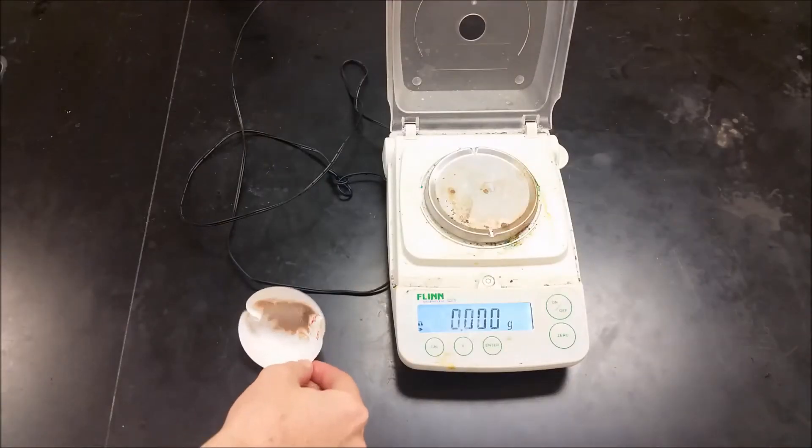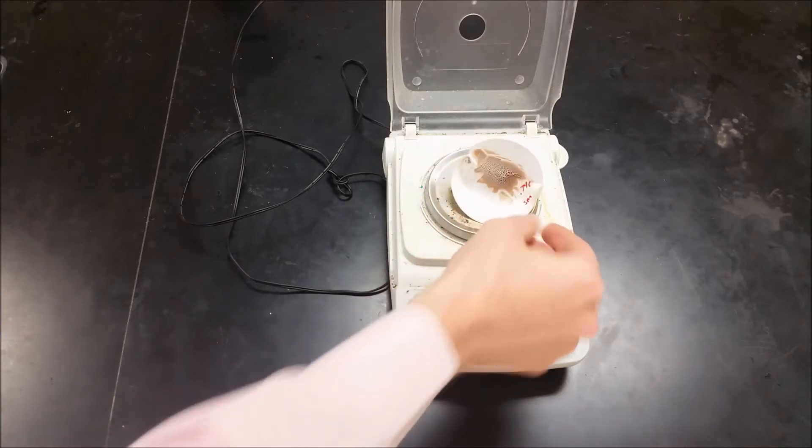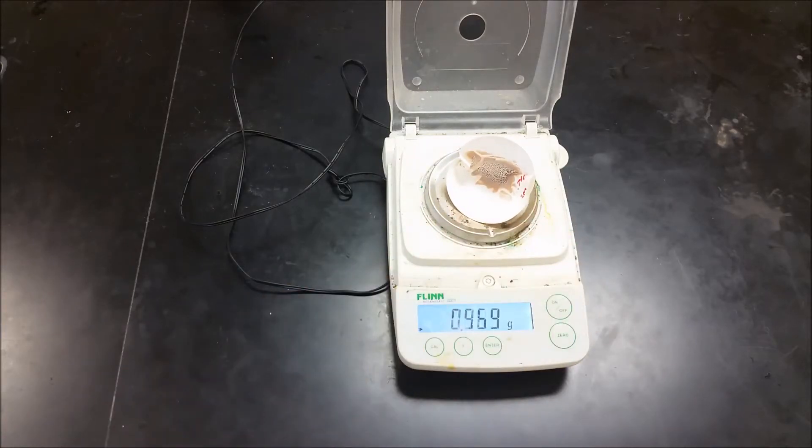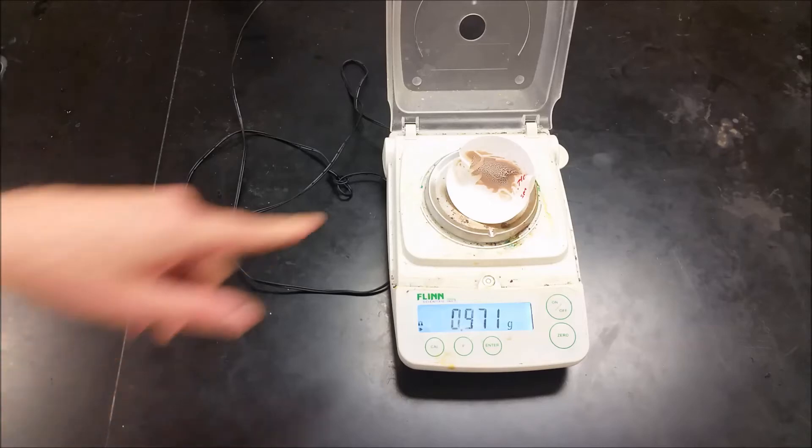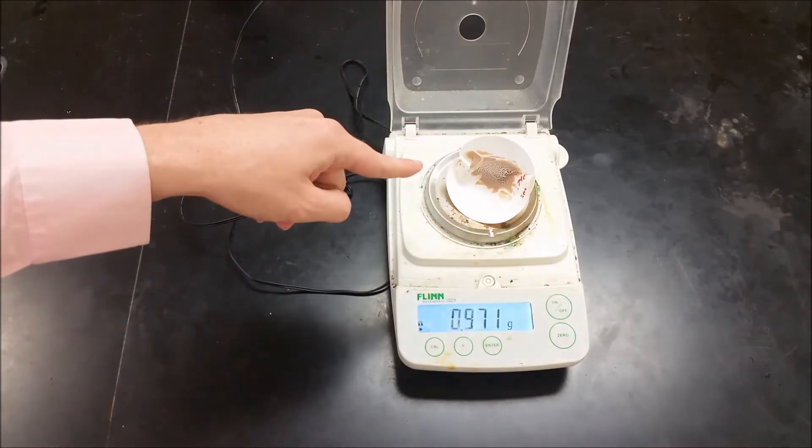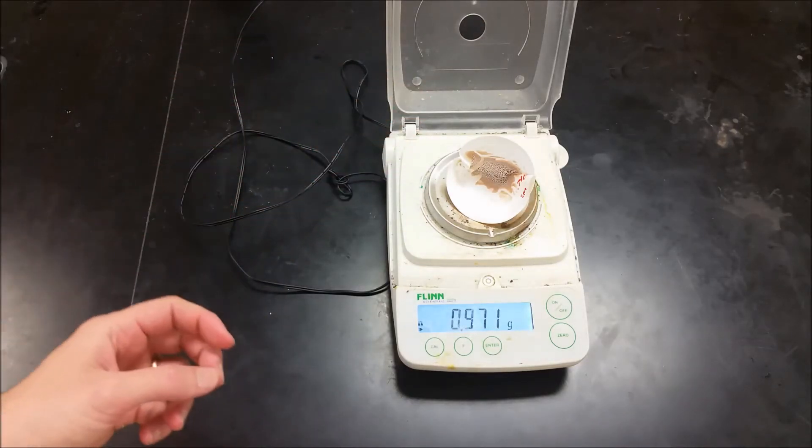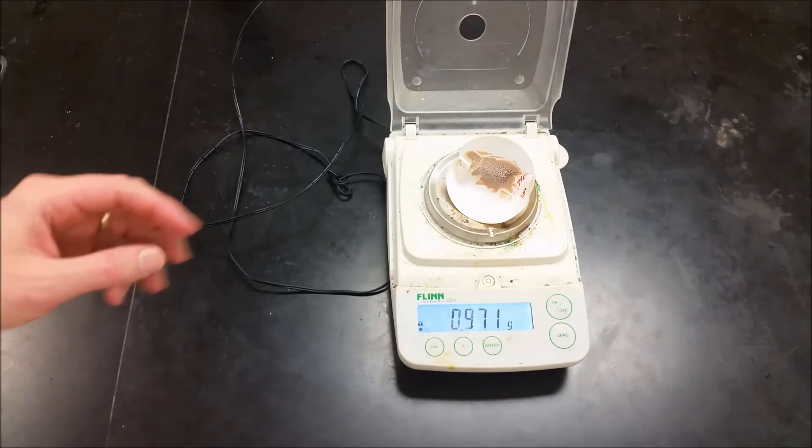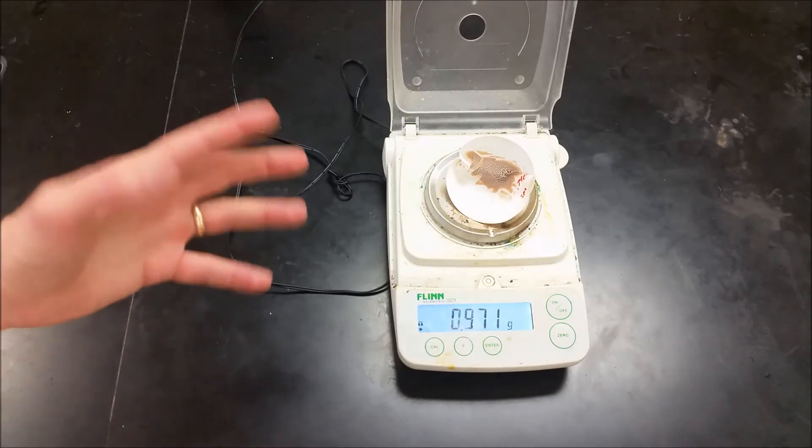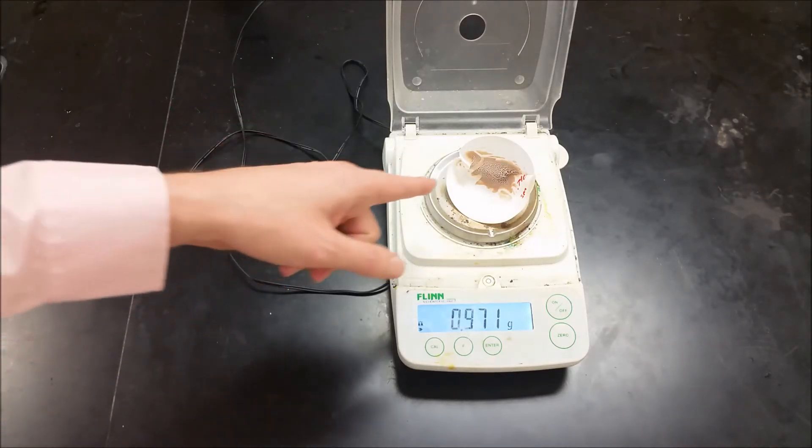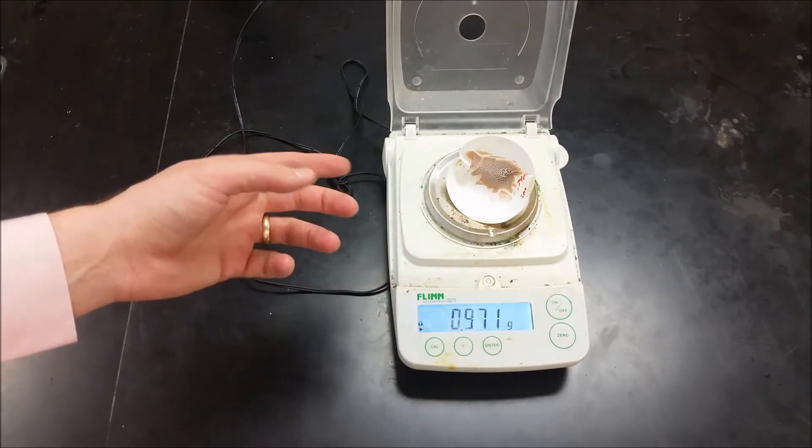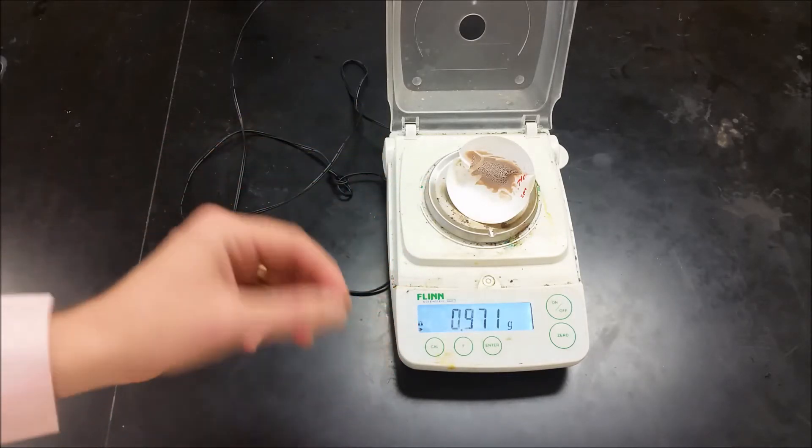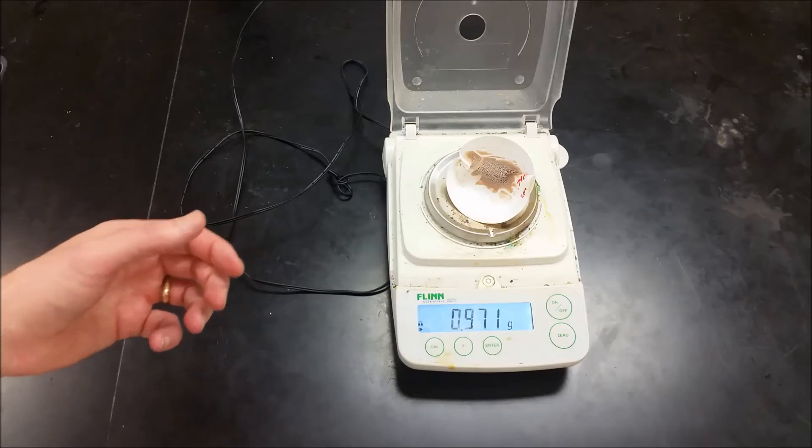So here we are a day later and here is our 0.746 gram filter paper, which is now up to 0.971 grams. So from that we can figure out how much strontium sulfite is on the filter paper and work backwards to figure out how much sulfite was in the wine. And then we can figure out the parts per million or concentration. That's not potentially all strontium sulfite. It could be something else present. So this will be the maximum limit on what that sulfite content could be.